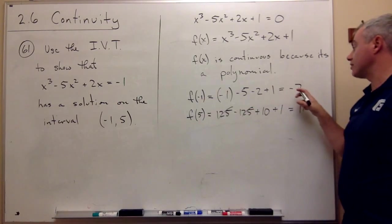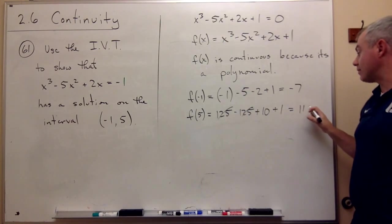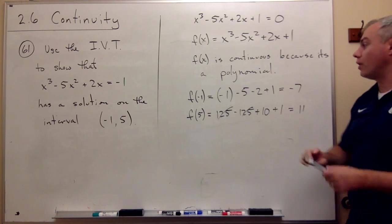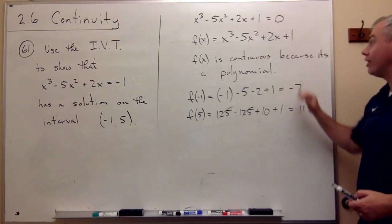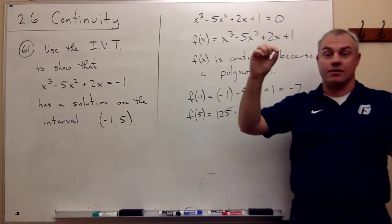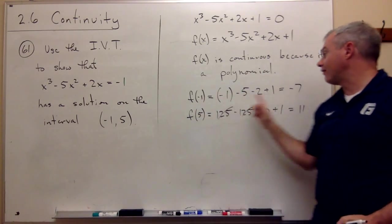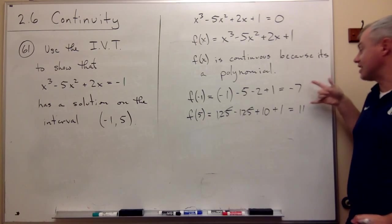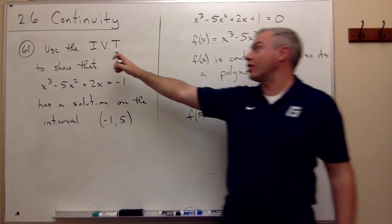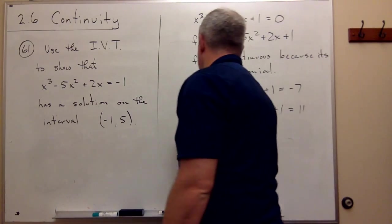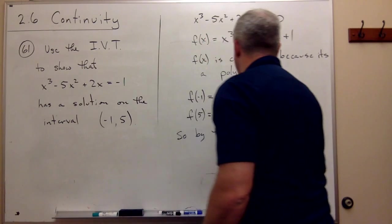So f of minus 1 gives me a negative value. f of positive 5 gives me a positive value. At one point I'm at a negative value, at another point I'm at a positive value, and I know that the function is continuous. So what must happen? Somewhere in between I must have a value where f of x is 0. So now I can use the power of the intermediate value theorem to say, by the intermediate value theorem,